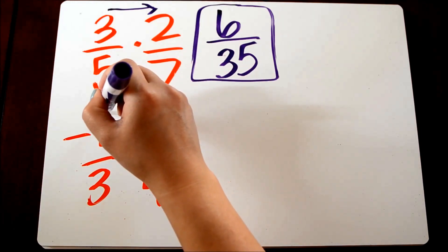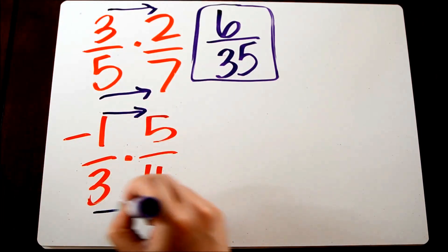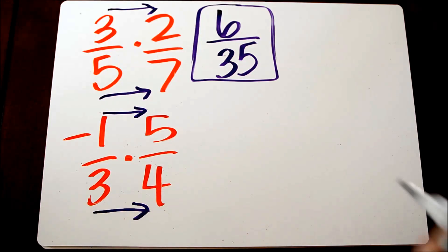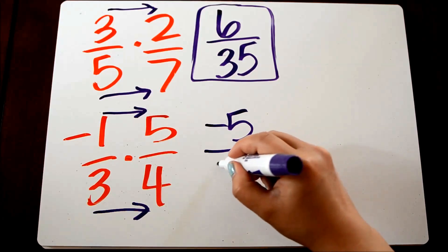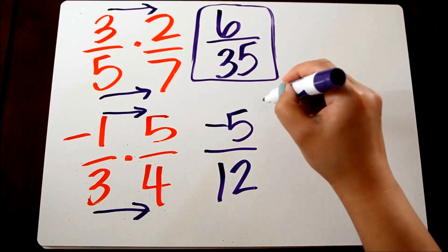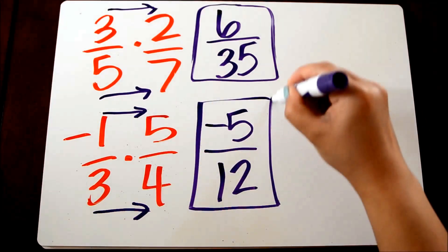Let's just assume the negative goes with the numerator. And negative 1 times 5 is negative 5. 3 times 4 is 12. And this is a fraction that can't be reduced any further, so that's our final answer.